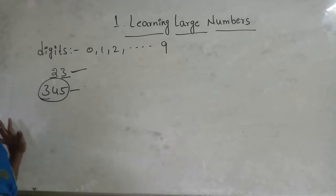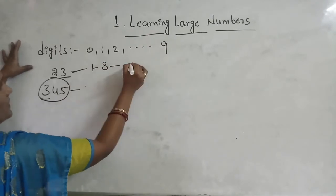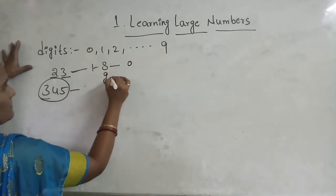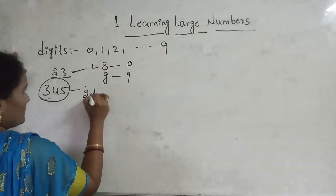In every number, I am having smallest number and greatest number. In single digit, smallest number is 0. Greatest number is 9.